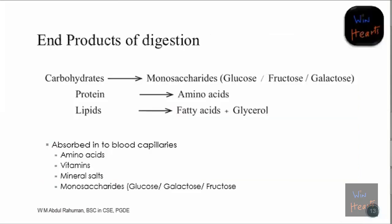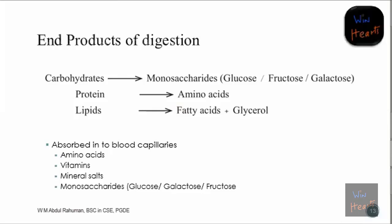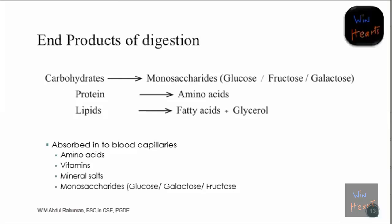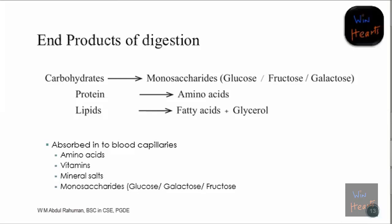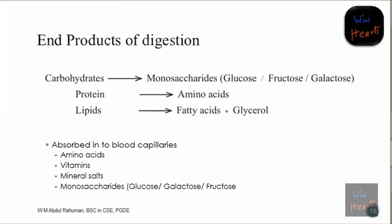To summarize the end products of digestion: carbohydrates are broken into monosaccharides, proteins are broken into amino acids, and lipids are broken into fatty acids and glycerol. These will be absorbed - monosaccharides, vitamins, amino acids, and mineral salts will all be absorbed. This absorption also takes place in our small intestine.